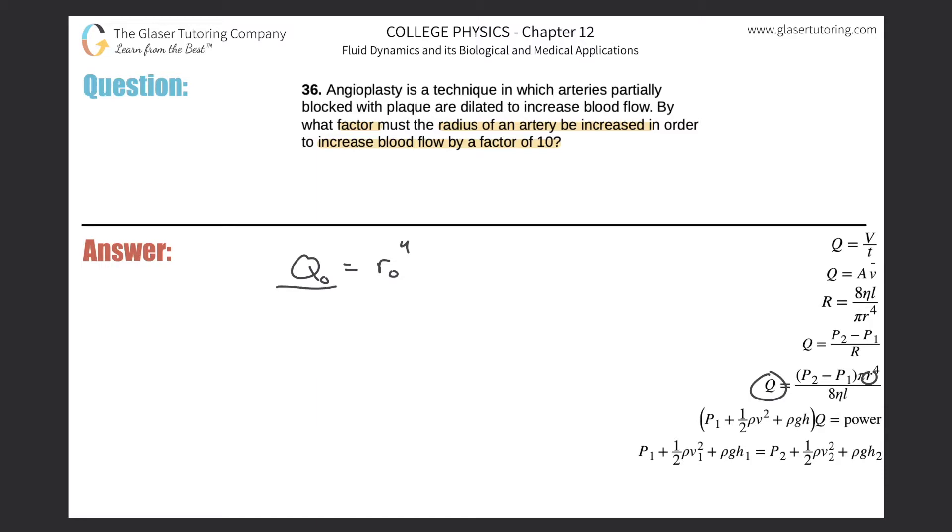To create my ratio, I'm going to put in the new values underneath. I can reorganize this now because both of these are raised to the fourth power. So I can say that qo over qn—o stands for original and n stands for new—this would be ro over rn, all raised to the fourth power.